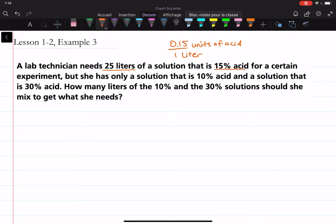So if she needs 25 liters, then how many units of acid does she need? We would get 25 times 0.15. Okay, I'm starting an equation here.